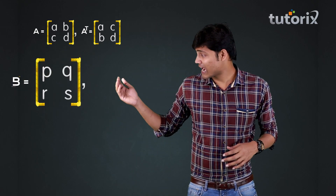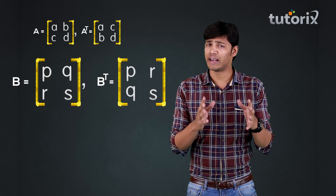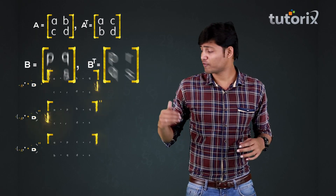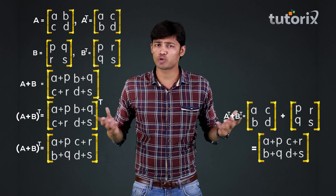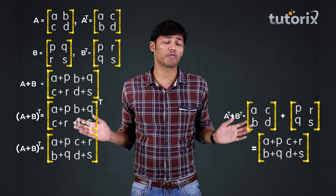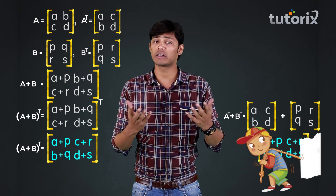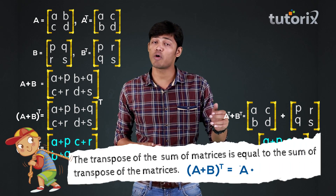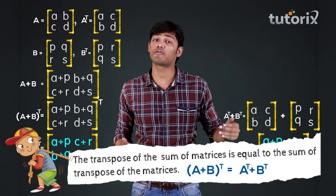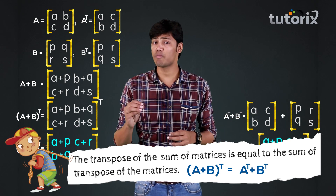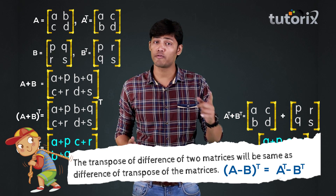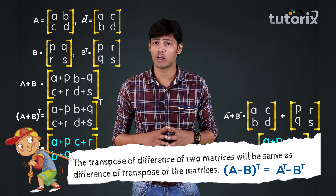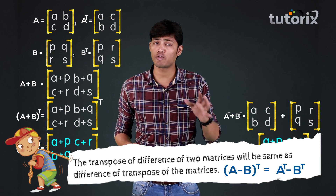To understand the next property, consider two more matrices B and its transpose. Now let us find the transpose of A plus B and the sum of A transpose and B transpose. We find that both of them are equal. So we can conclude that the transpose of the sum of matrices is equal to the sum of the transpose of the matrices. The same property holds even in the case of subtraction as well — that is, the transpose of the difference of two matrices will be the same as the difference of the transpose of those two matrices.